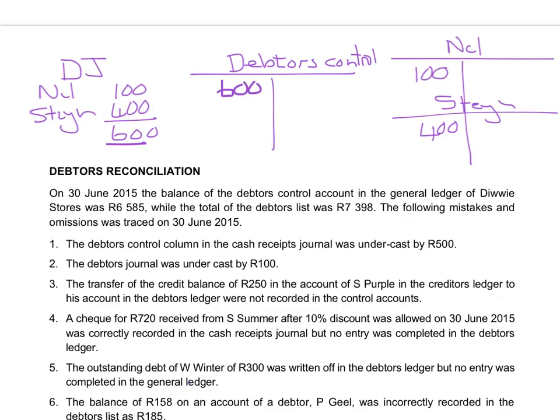Therefore, the debtors control account should have the same balance as the balance in the debtors ledger. If we add the totals in the debtors ledger, we see that the total amount in the individual accounts indicates that 500 rand is outstanding. In the debtors control, the amount is 600 rand. That immediately indicates there is a mistake, and I must go and look for it and correct it.